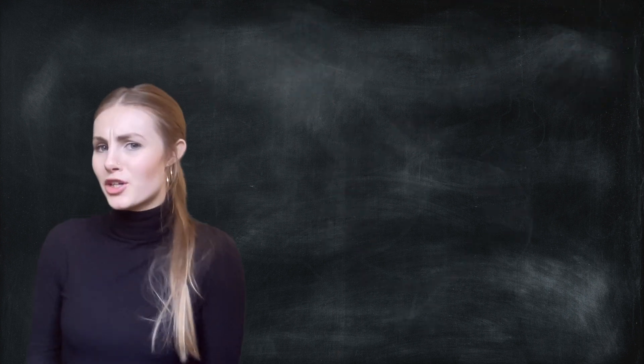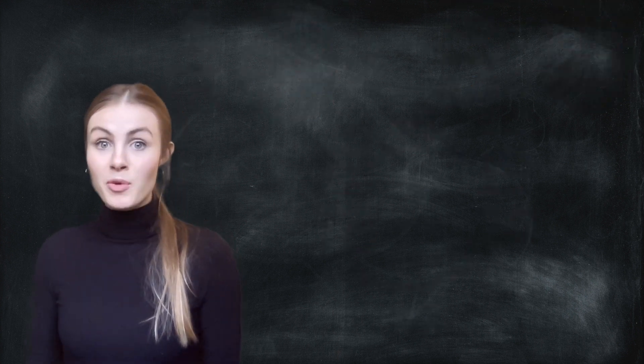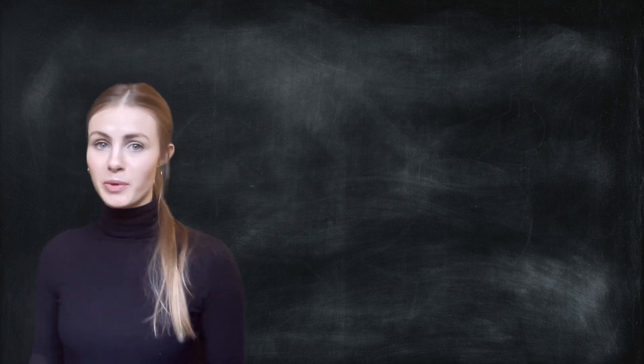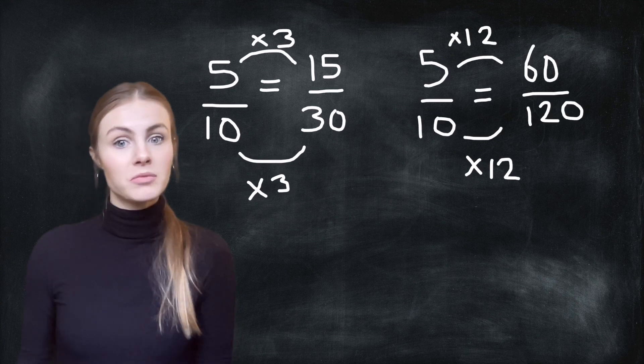Now I don't have to multiply by two. As long as I multiply the top number and the bottom number by the same amount, it doesn't really matter. So I could multiply it by three or twelve or a hundred.